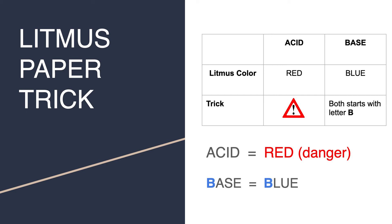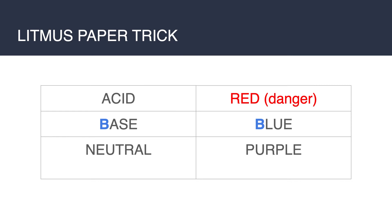You can just remember one of these tricks because the other one is going to be just the opposite color. To summarize: litmus paper turns red for acids, because acids are dangerous and the color of danger is red. Base turns litmus paper blue because both start with the letter B. And don't forget — for neutral substances, the color of litmus paper is purple. That's all for this small and easy trick — make sure you share it with your friends. Thank you!